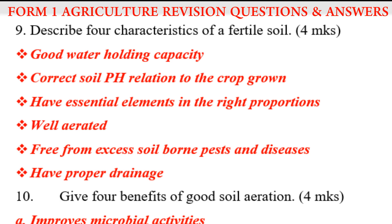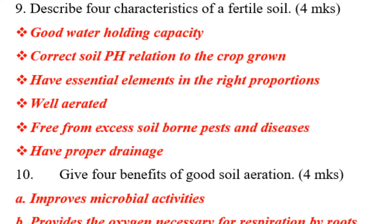Question number nine: describe four characteristics of a fertile soil. A fertile soil has good water holding capacity. It has correct soil pH. It has essential elements in right proportions. It is well aerated, and it is free from excess soilborne pests and diseases. The last one — it has proper drainage. Those are the characteristics of a good fertile soil.